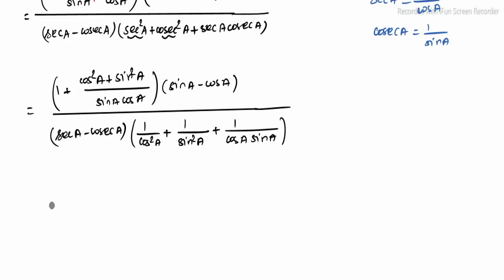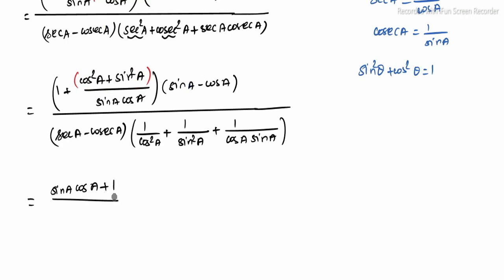In the numerator, note that sin²A + cos²A equals 1. Apply this identity — the numerator simplifies to 1 plus sin A · cos A divided by sin A · cos A, into (sin A minus cos A).